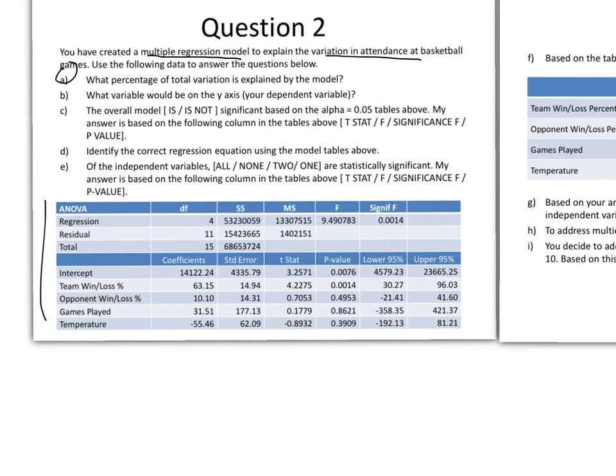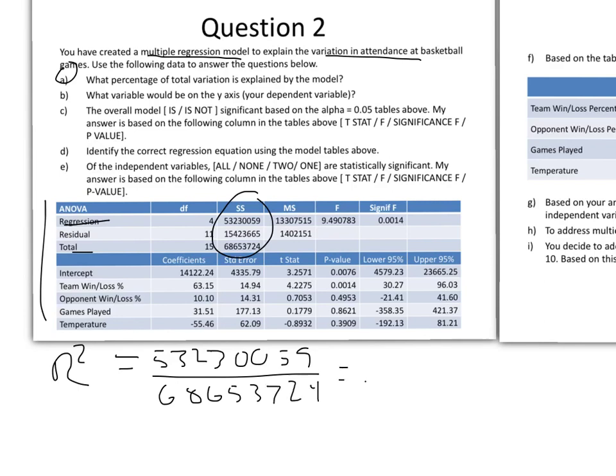Part A asks what percentage of total variation is explained by the model. That's r-squared. We can find that value by looking at the sum of squares column, taking the regression sum of squares over the total sum of squares. So we have 5,320,059 over 6,865,724, and that's going to be 0.775. So 77.5% is the percent of variation explained by the model. That's the overall model. This is multiple linear regression, so we have multiple variables. 77.5% is explained by the variables in the model, which are right down here: team win-loss percentage, opponents win-loss percentage, games played, and temperature.